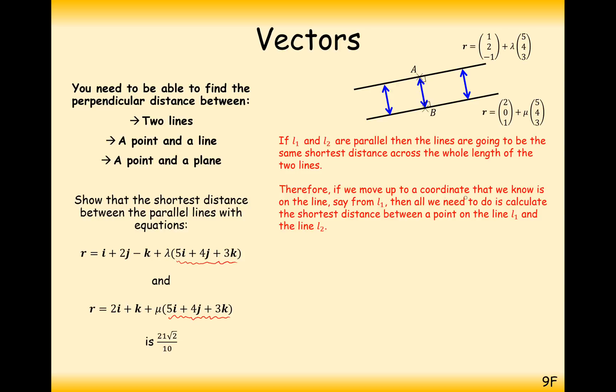It's rare that in these types of problems we can use multiple coordinates to find that shortest distance. But because these are parallel, they're always going to be the same distance apart. Therefore, if we move up to a coordinate that we know is on the line L1, for example, then all we need to do is calculate the shortest distance between that point on line 1 and line 2. If we know that this 1, 2, minus 1 coordinate is on this line, then it just turns into the shortest distance between a point and a line type question. And that's the easiest way of answering these types of questions.